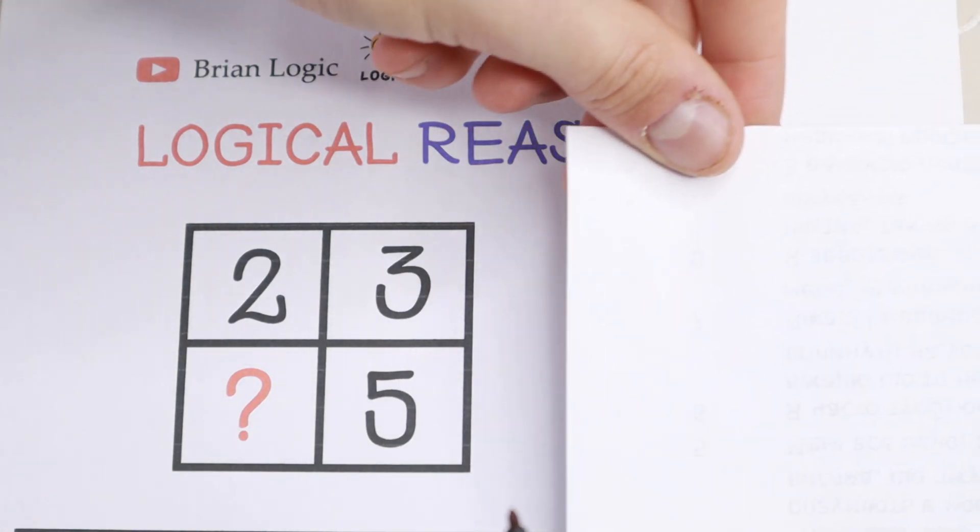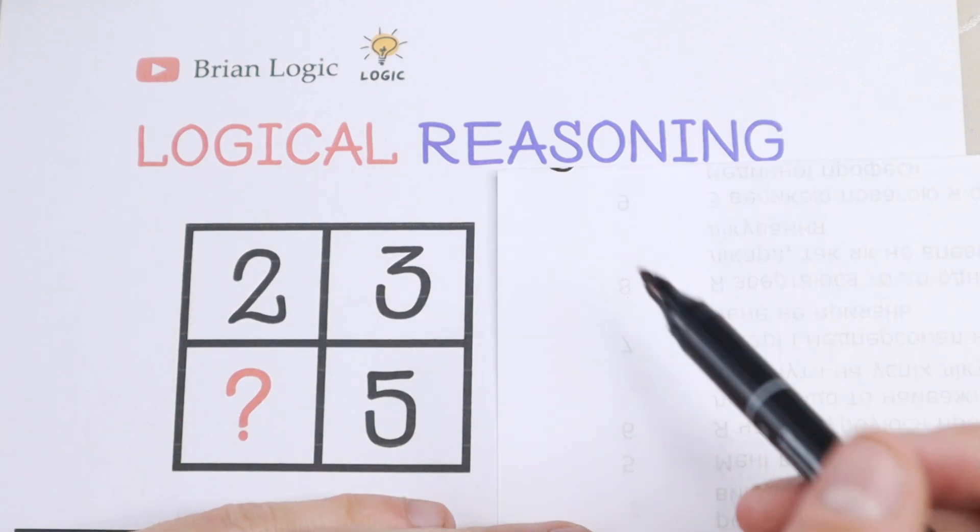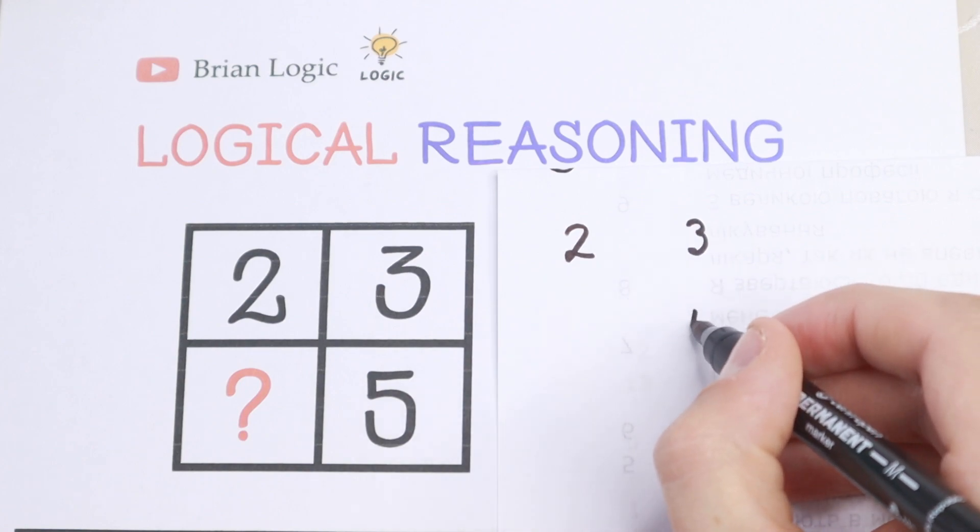So let's try to solve it. First of all take a look what we will have. We have a lot of numbers. We have 2, 3 and 5. So let's write it. We will have 2, we will have 3 and we will have 5.